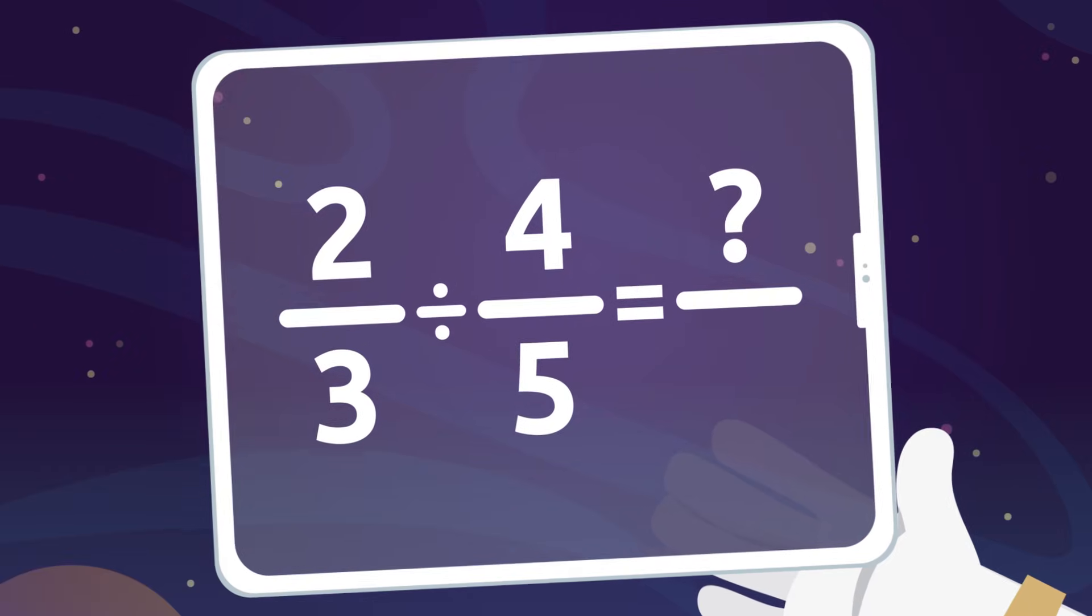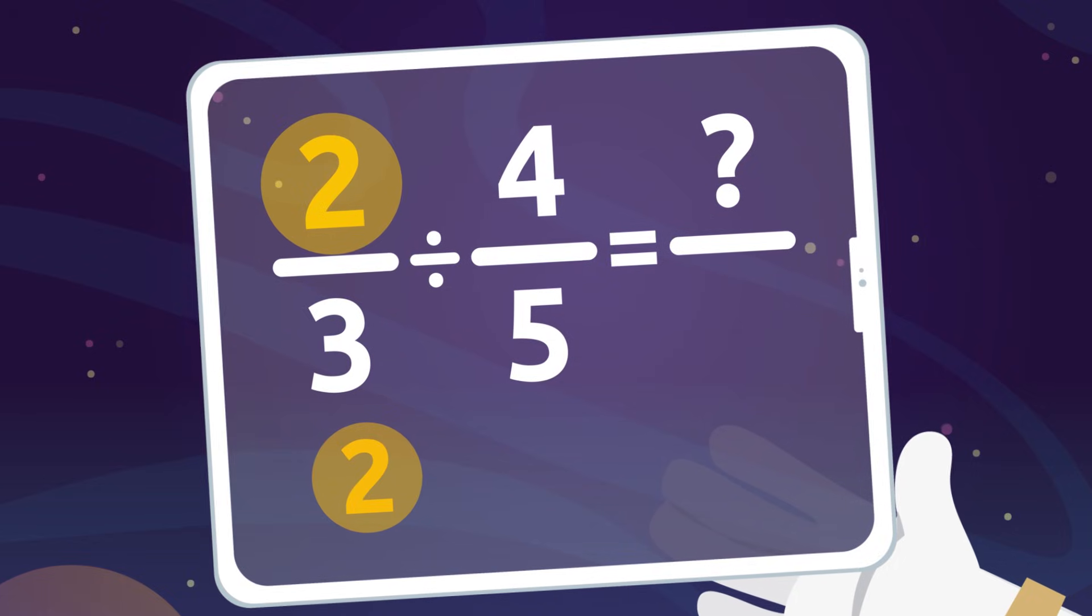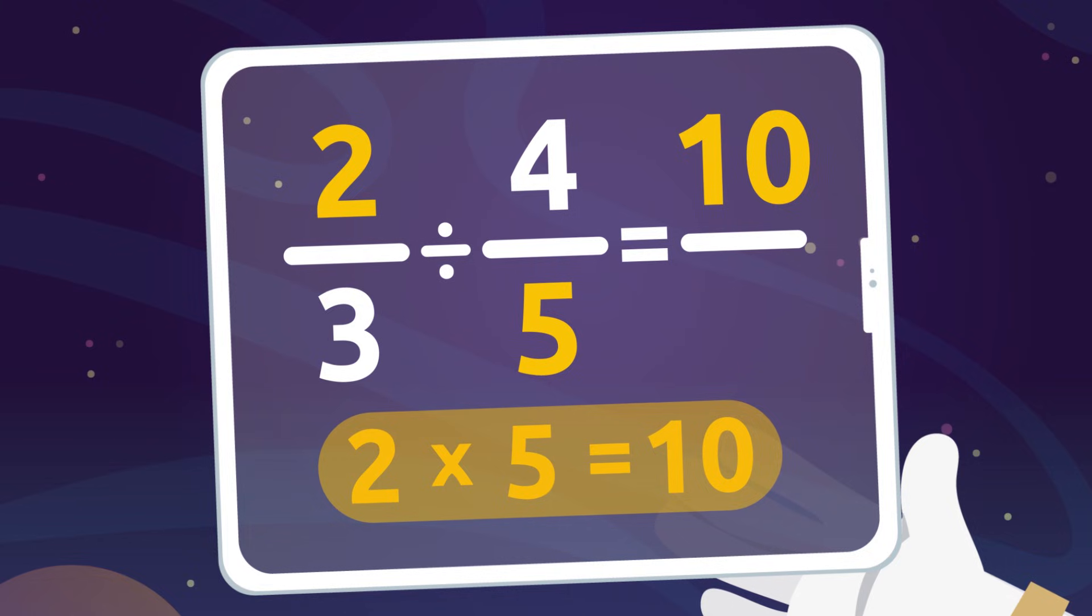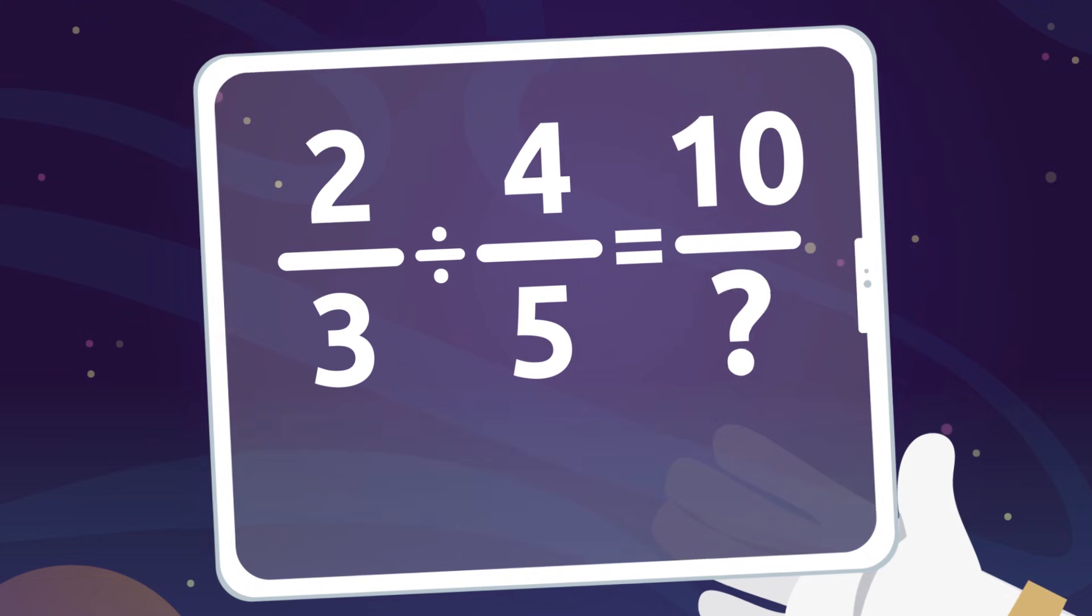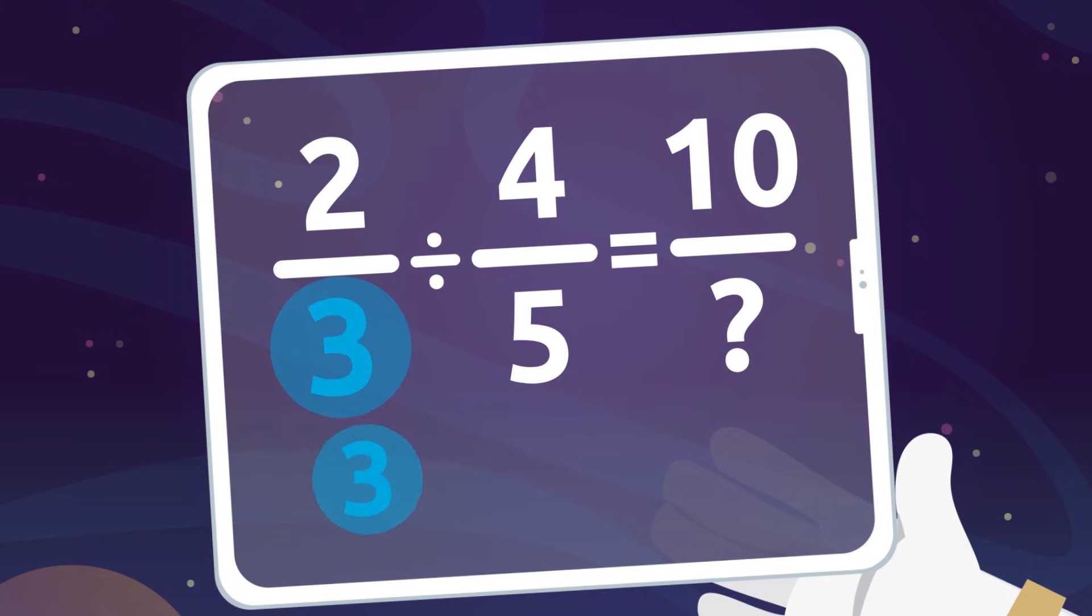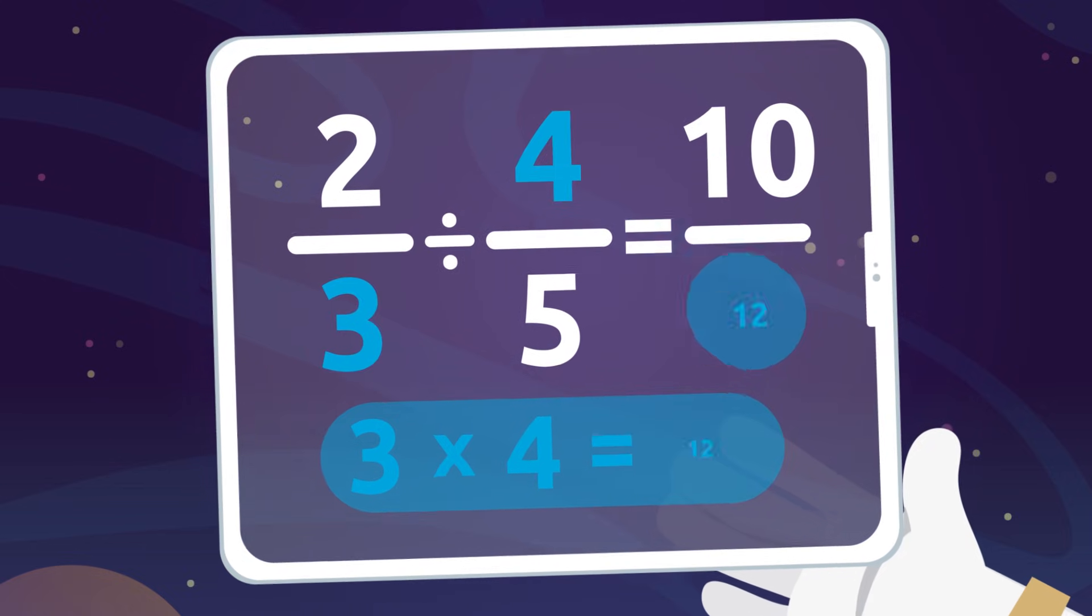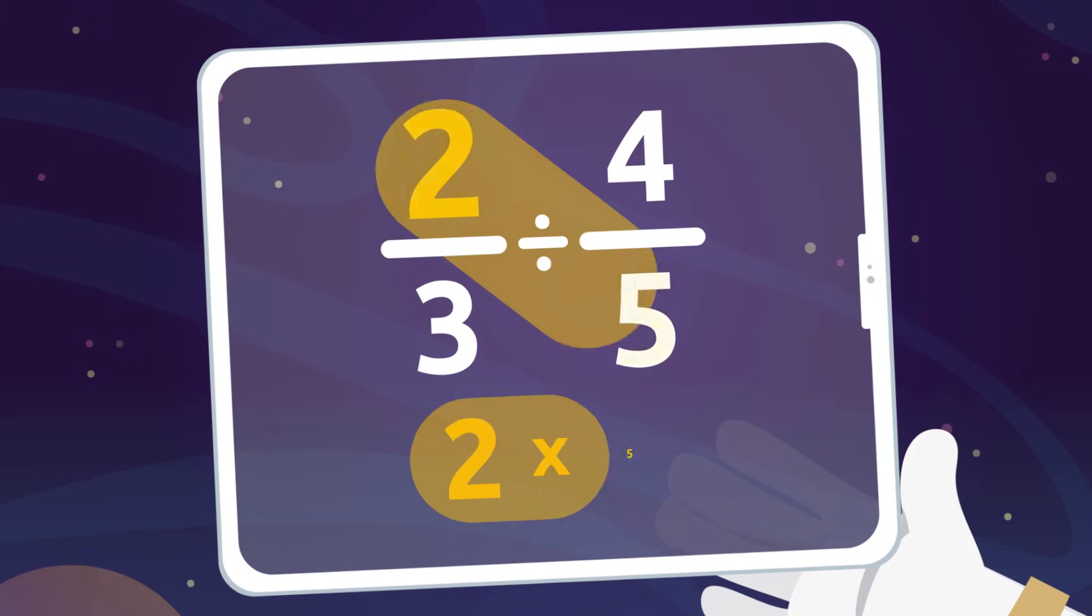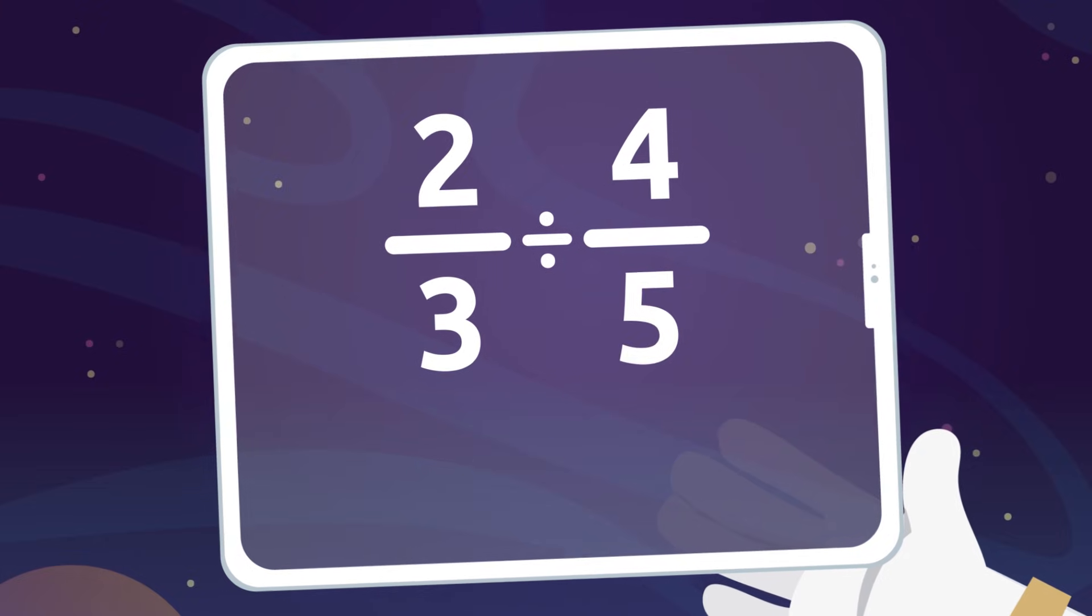When we divide fractions, to find the numerator we should multiply the numerator of the first fraction by the denominator of the second fraction. To find the denominator, we multiply the denominator of the first fraction by the numerator of the second fraction. This means that to divide fractions we cross multiply them.